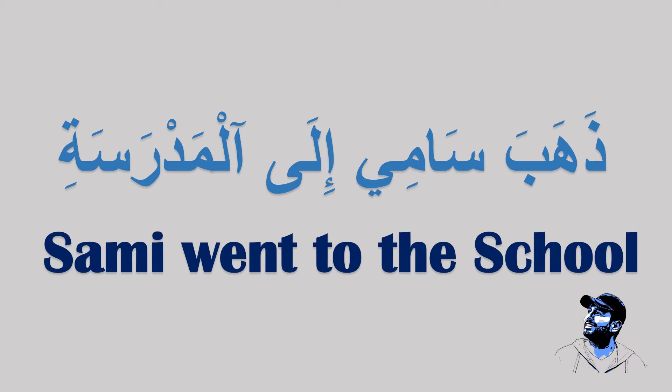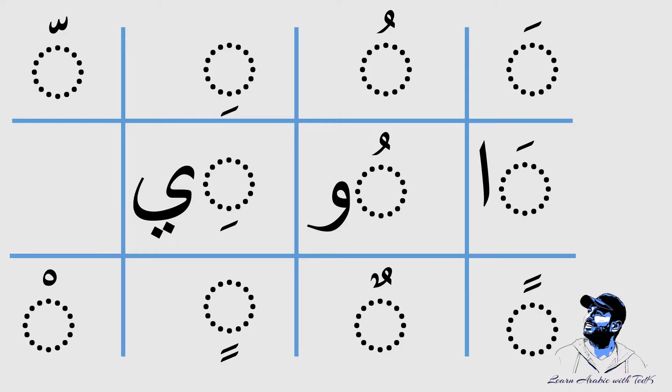"Dhahaba Saami illa madrasati" — and this means in English: Sami went to the school. I also added the harakad to the text. Sometimes you'll find text without harakad online; that is for native speakers. However, for non-native speakers, at least at the beginning, you would need the harakad. I'll read it again, explain the methodology, and then I hope you can also read it by yourself: "Dhahaba Saami illa madrasati" — Sami went to the school.